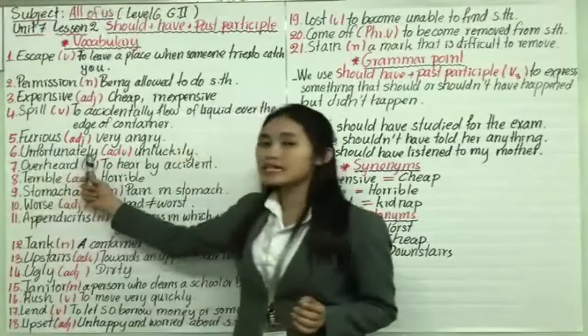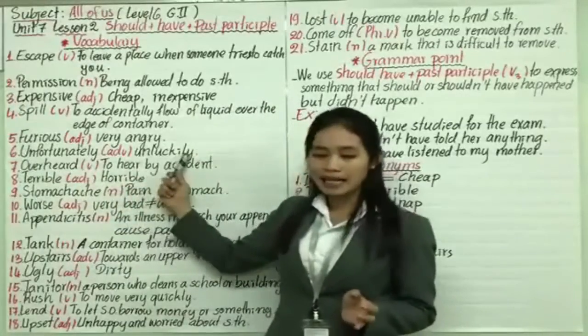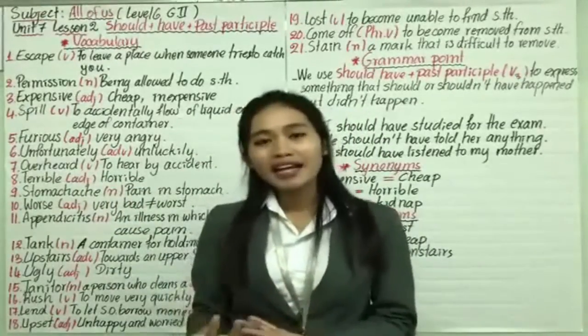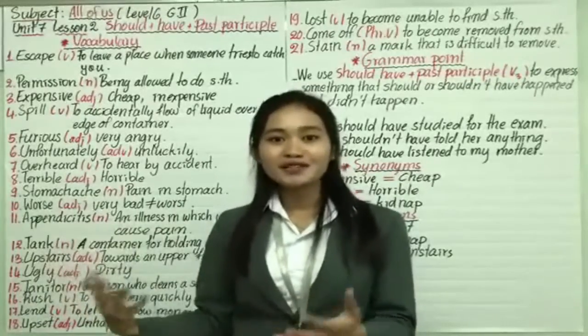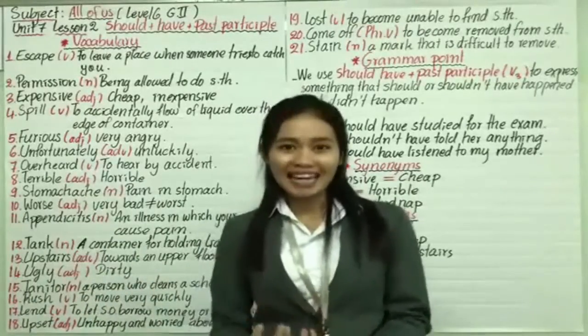Number six is unfortunately, functions as adverb, meaning unluckily. For example, unluckily I bought a gift for you but you ran out. It means you didn't get that gift, so you are unlucky to get a gift.